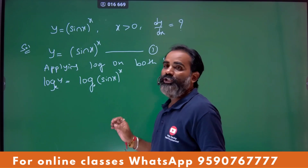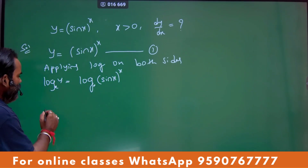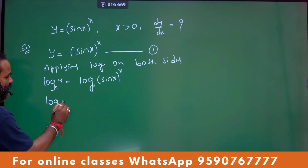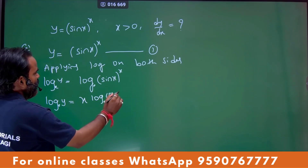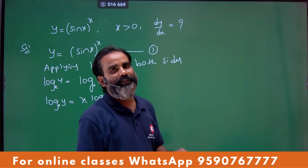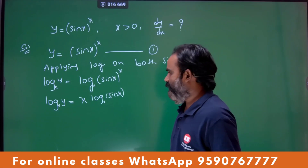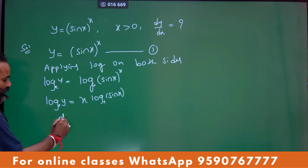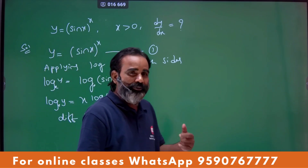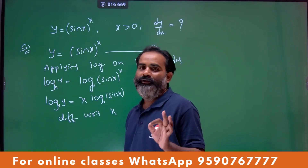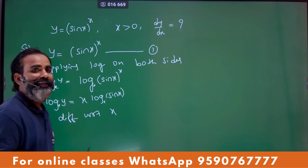You take log to the base e using logarithmic properties. By property, I can bring the power down — so log y to the base e equals x times log sin x to the base e. Now differentiating with respect to x — compulsory to mention, especially in parametric. Okay, so mention this habit.